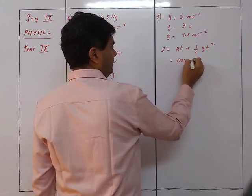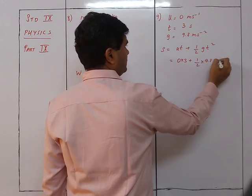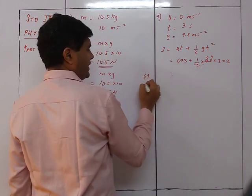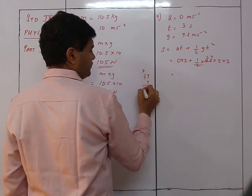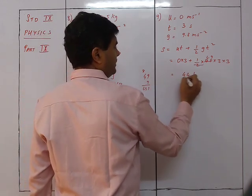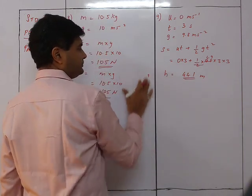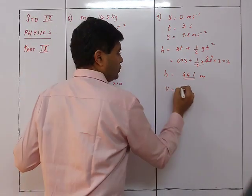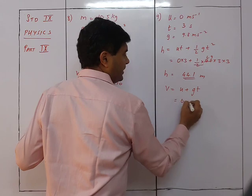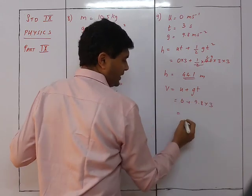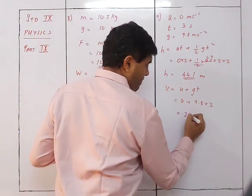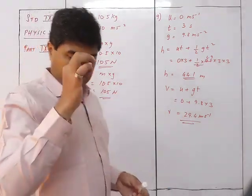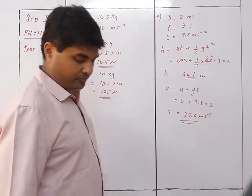u = 0, so h = ½ × 9.8 × 3² = 4.9 × 9 = 44.1 meters. For velocity: v = u + gt = 0 + 9.8 × 3 = 29.4 m/s. So the height is 44.1 m and the velocity when the ball strikes the ground is 29.4 m/s.